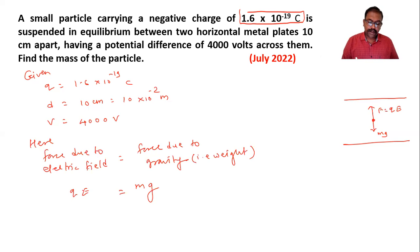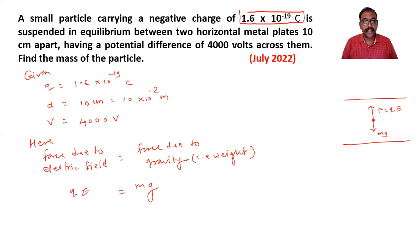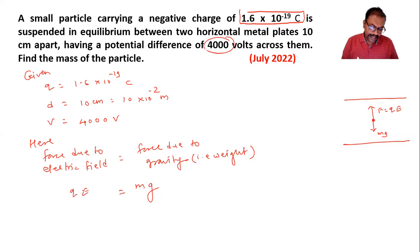We need to find m. g is already known as 9.8, and charge q is 1.6 into 10 raise to minus 19. But electric intensity E is not given directly; instead, 4000 volts is given as the potential. Using the relationship between electric intensity and electric potential, we can write E is equal to V by d.